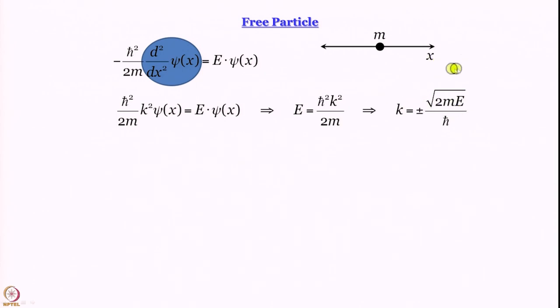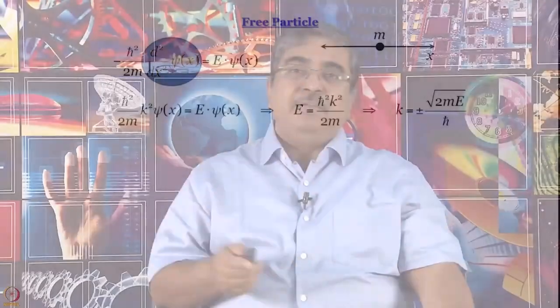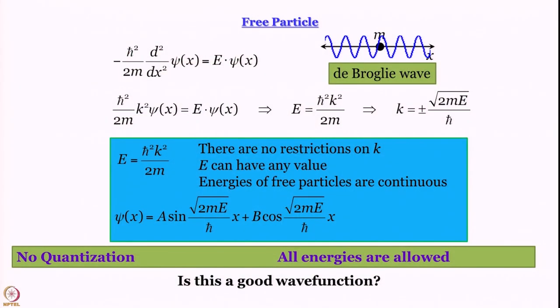It turns out that k gives you the momentum. The ± sign means the particle can move in either direction. So the energy is fully defined, the magnitude of momentum is fully defined, but the direction of momentum can be either plus or minus. There is no restriction on k, which means there is no quantization and all energies are allowed.